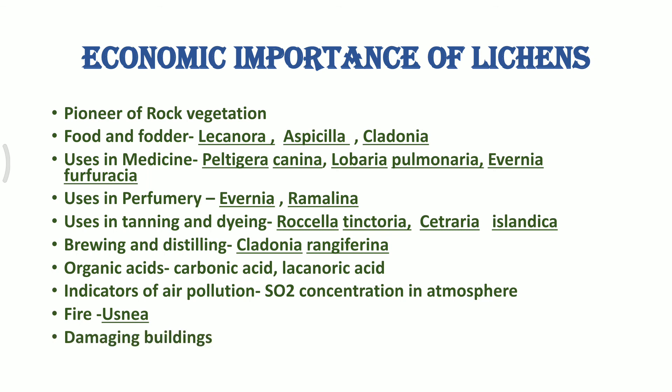Lichens can also damage buildings. The algal bloom seen on walls, window panes, marble, and cemented walls and ceilings is because of the presence of lichens, which are a symbiotic combination of a fungus and alga. They start by damping the surface and later completely deteriorate the wall. This covers all about lichens and their economic importance.